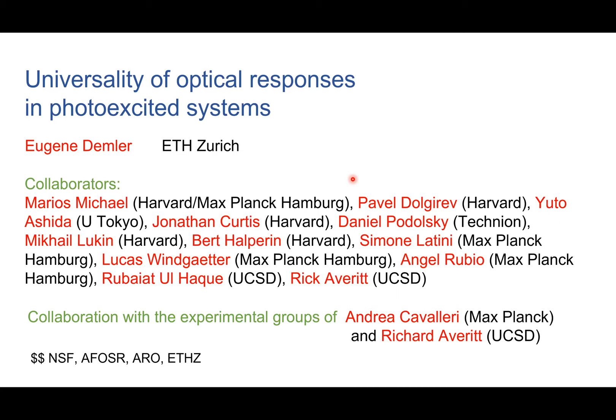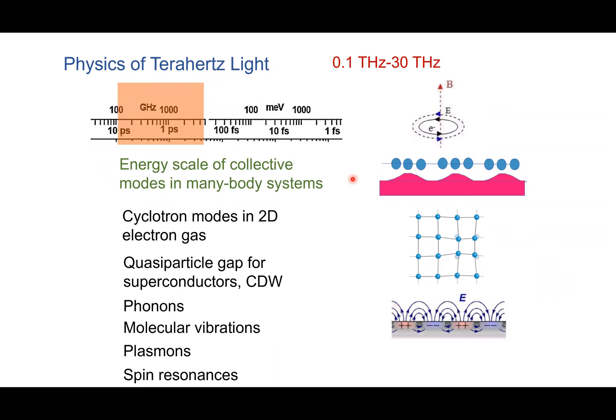The main credit for the work I'll be presenting today goes to Marius Michael and Paio Dolgorov. Marius was a student in my group; Paio is currently a student. More recent work is being done with John Curtis, and also some related projects with Yuta Ashida. What also makes this project a lot of fun is collaboration with our experimental colleagues at the Max Planck Institute — Andrea Cavalleri's group — and also Rick Averitt's group at UCSD.